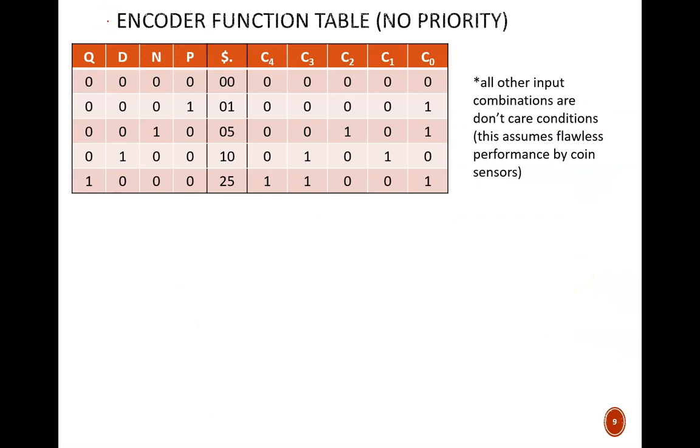There are two categories of encoders: no-priority and yes-priority. Let's look at the simpler no-priority encoder first to understand our goal. We'll then develop the more useful priority encoder for use in our final machine.